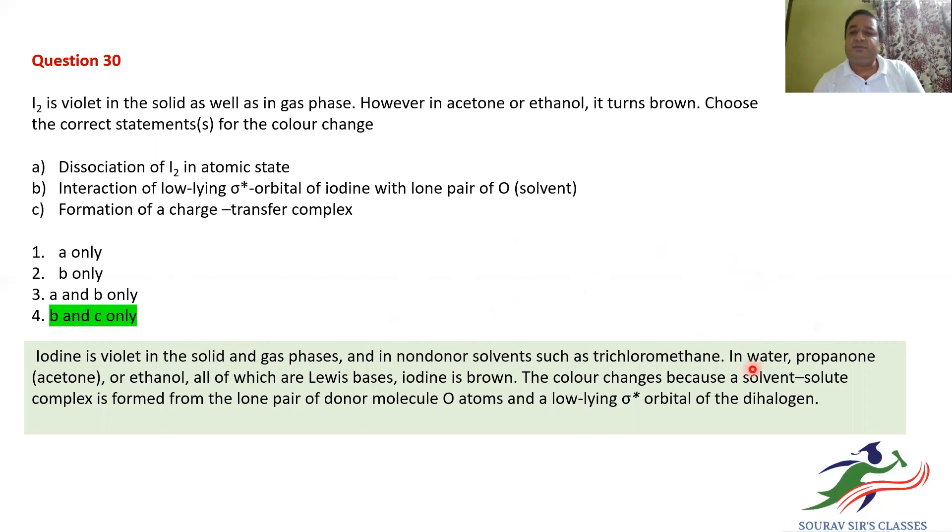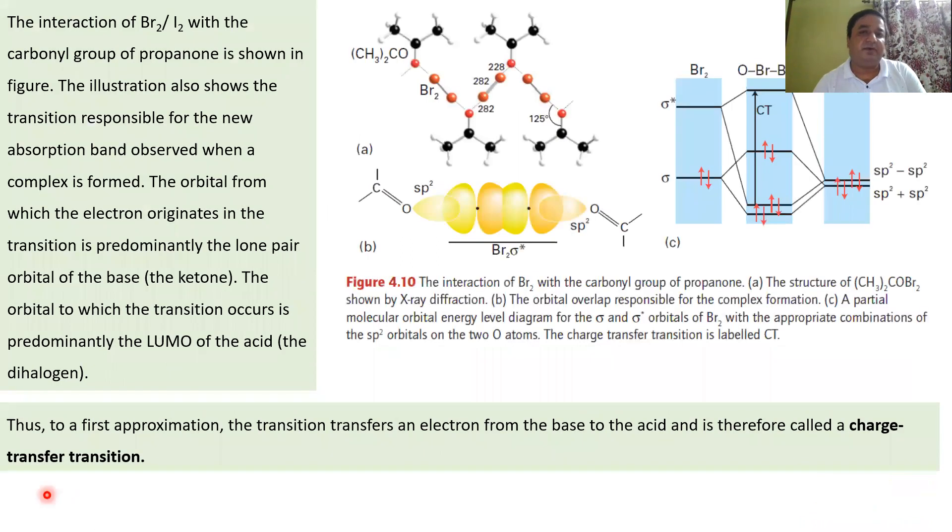The color changes because a solvent-solute complex is formed. From the lone pair of the donor molecule O atoms and the low-lying σ* orbital of the dihalogen. In this case, it is our iodine. Let's have a look at the MO picture. How this is happening. Now, this is a crystal structure that was isolated and studied.